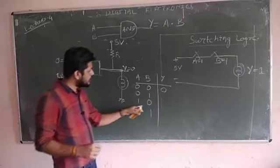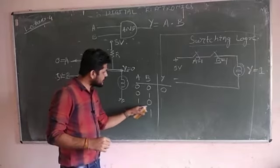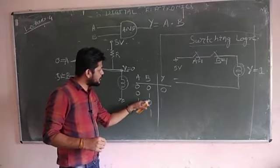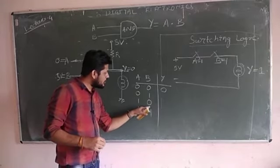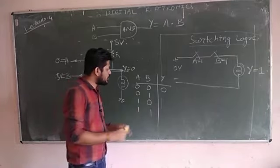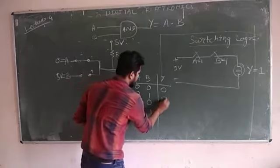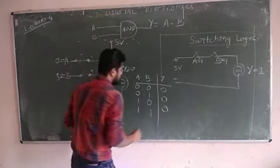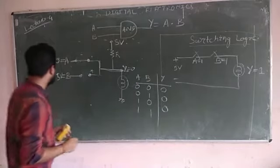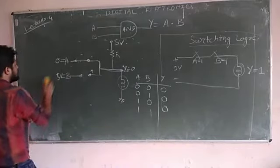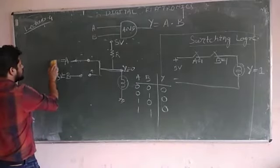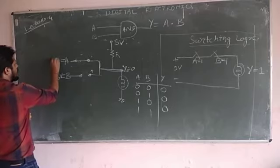Similarly in the third case, Y will be connected to ground through the B terminal. In the last case, when both inputs are high — A equals 5 volts and B equals 5 volts — the minimum potential required to turn on the diode must be 5 volts.